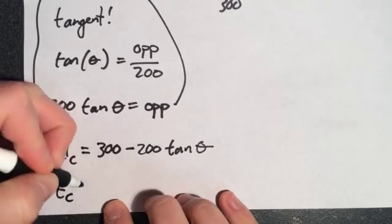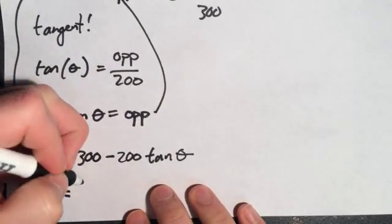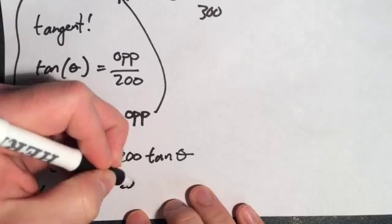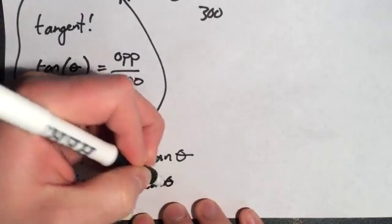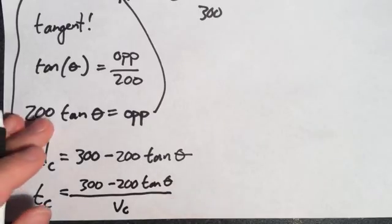So then time on the concrete, which is what you actually care about from here. Time on the concrete is now, in fact, 300 minus 200 tan theta divided by your velocity on the concrete, which I believe is 7.